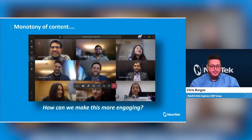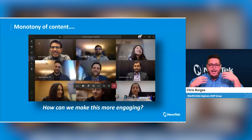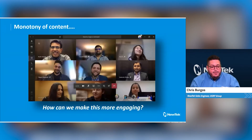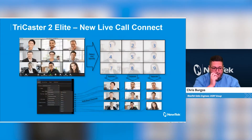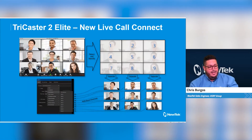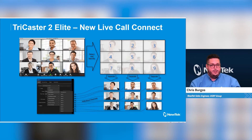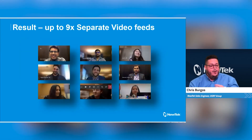As we're talking about these productions, we have a lot of things that are very basic — a lot of Zoom meetings, Teams meetings. This has been the last year plus of our lives, and we really want to make this more engaging. So we have this new software in TC2 called Live Call Connect, and it's really easy to use. It takes a given meeting room — Zoom, Teams, or what have you — and converts up to nine callers into individual signals into our switcher.